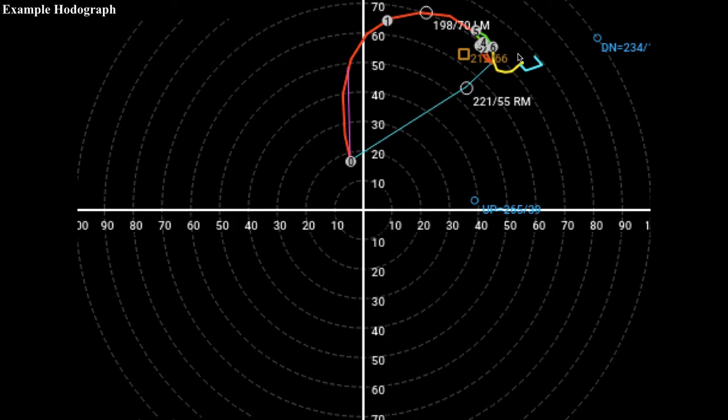Of course, if you follow any sort of severe weather events online, then you've probably seen at least one of these during the course of a potential severe weather event. A lot of people like posting these. But here we're actually going to take a look at how exactly these hodographs are plotted and what exactly they mean, especially as it pertains to storm-scale vorticity.